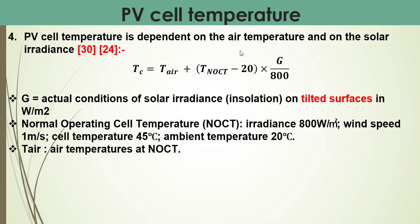An important issue we must discuss is the effect of temperature — the lowest and highest temperatures that the PV modules will face in the field. The photovoltaic cell temperature is dependent on the air temperature and on the solar irradiance.